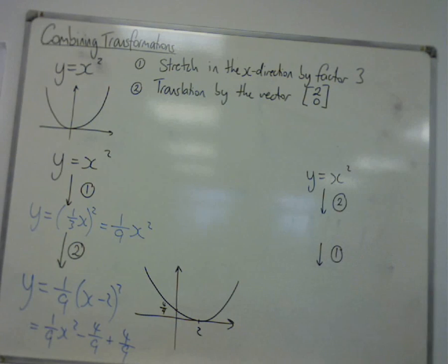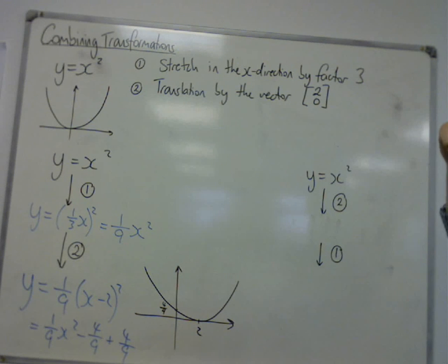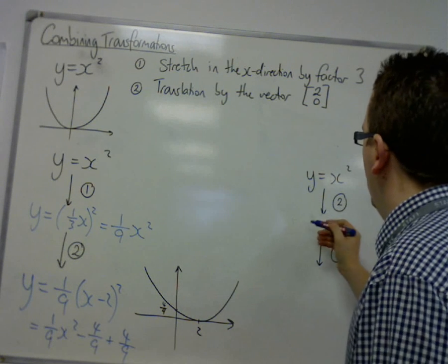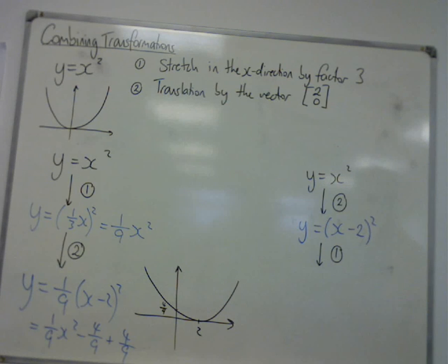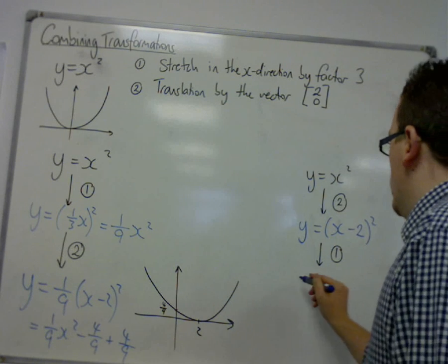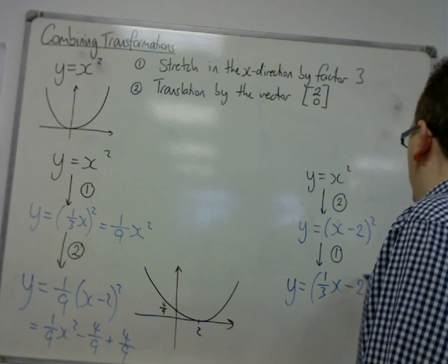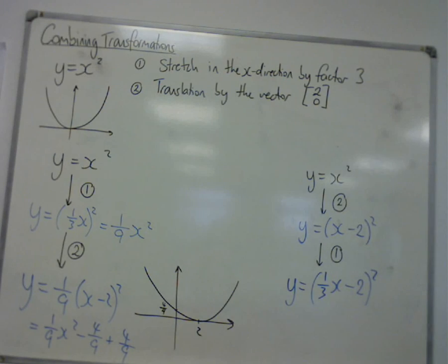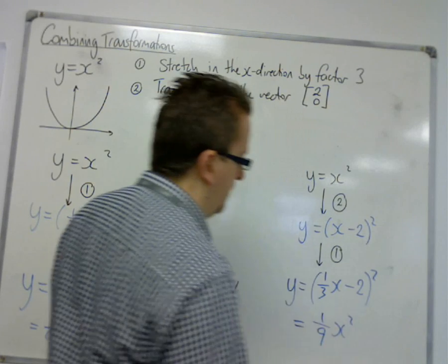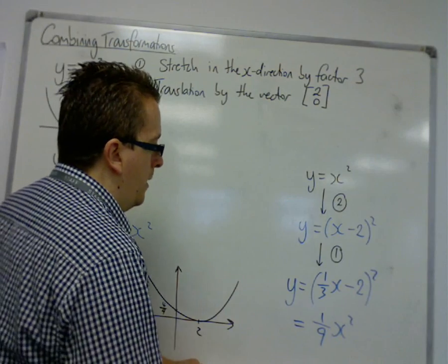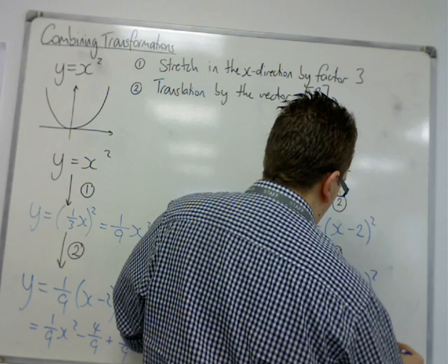So let's see what happens when we reverse the order. So first of all, we're doing the translation by the vector [2, 0]. So we get y equals (x minus 2) squared. Then I'm going to do the stretch. So y equals (1 third x minus 2) all squared. Which, when I multiply it out,